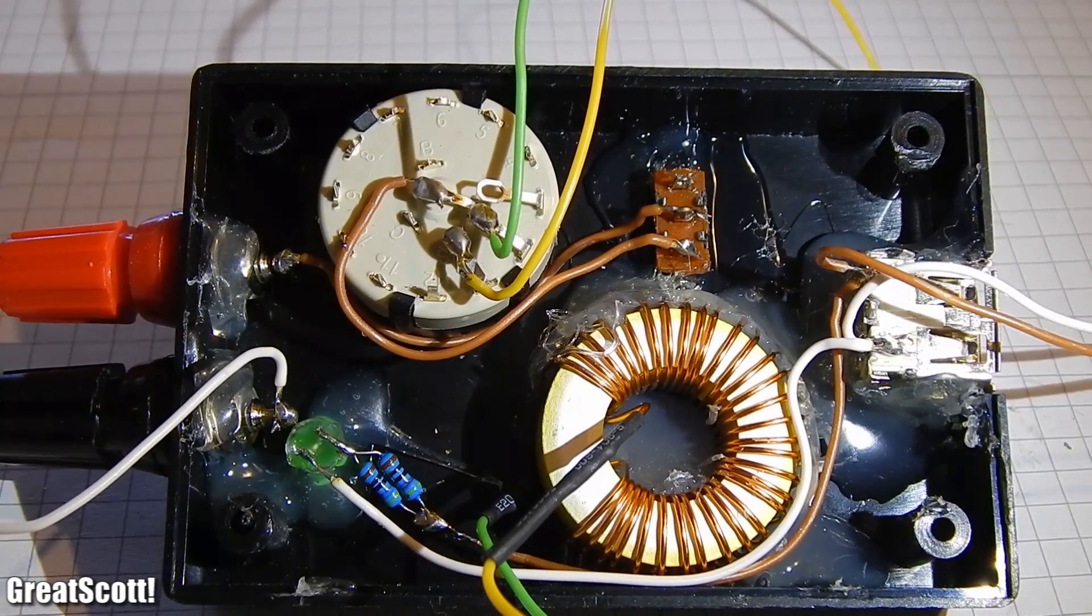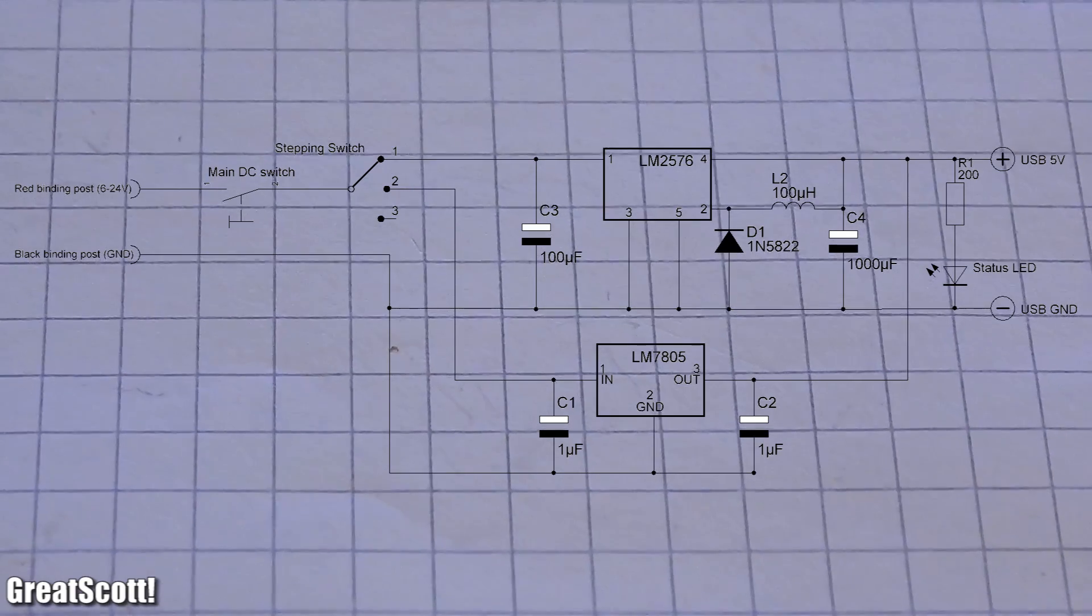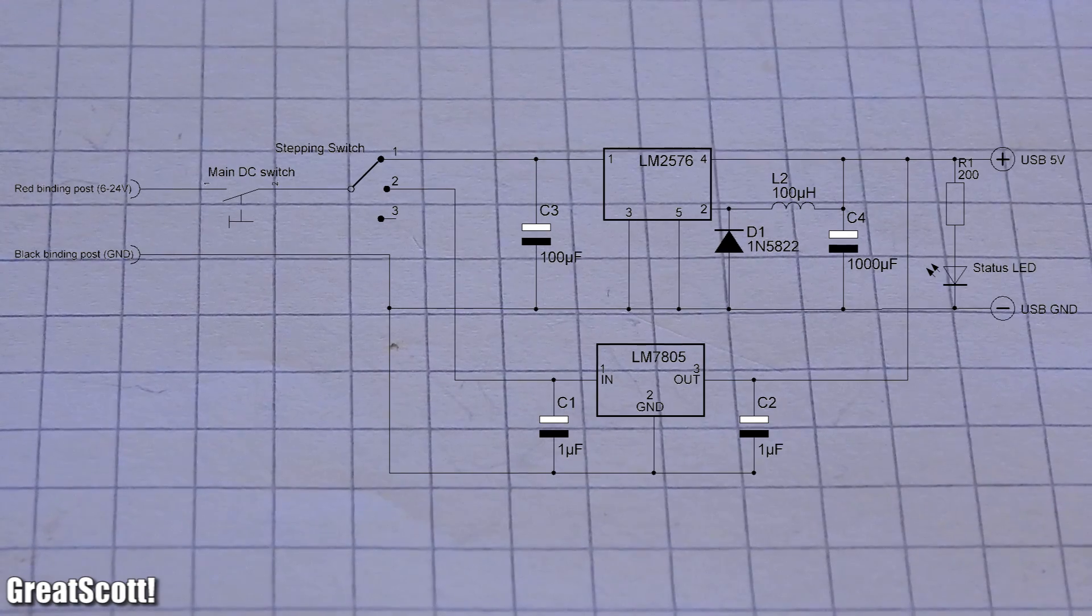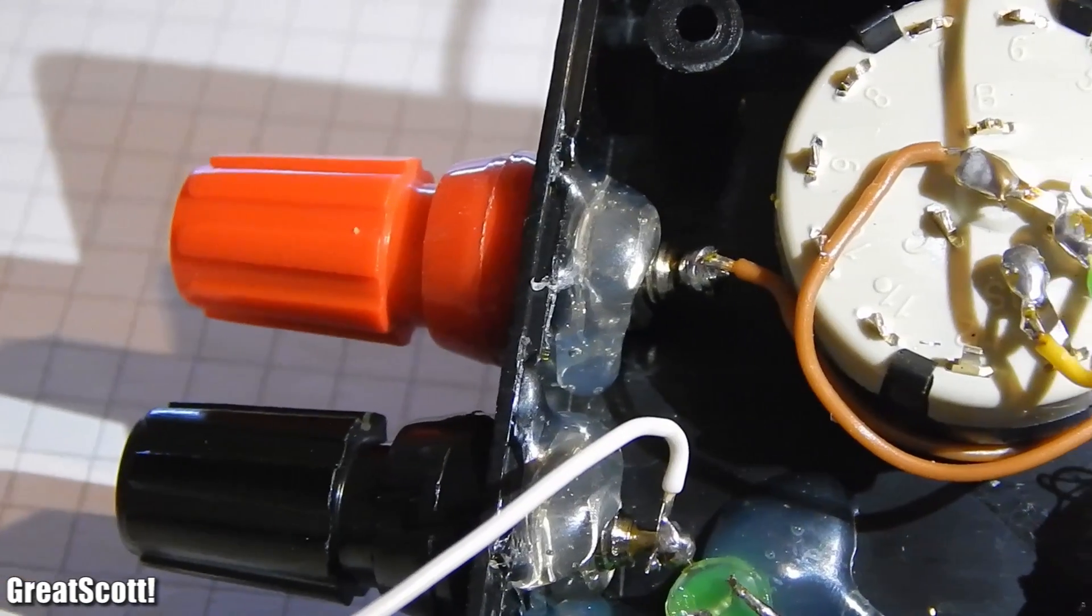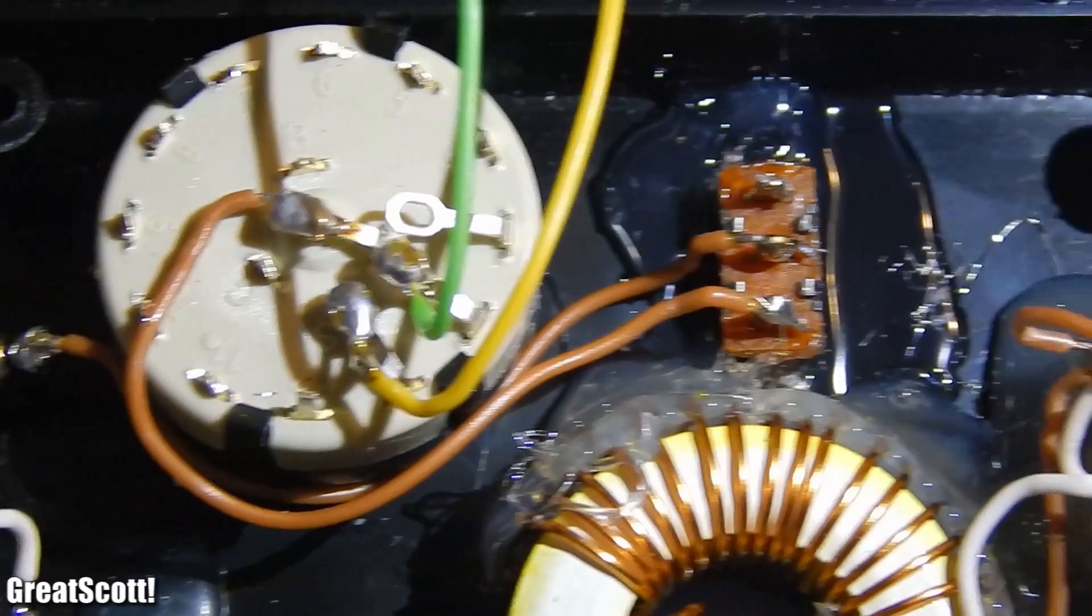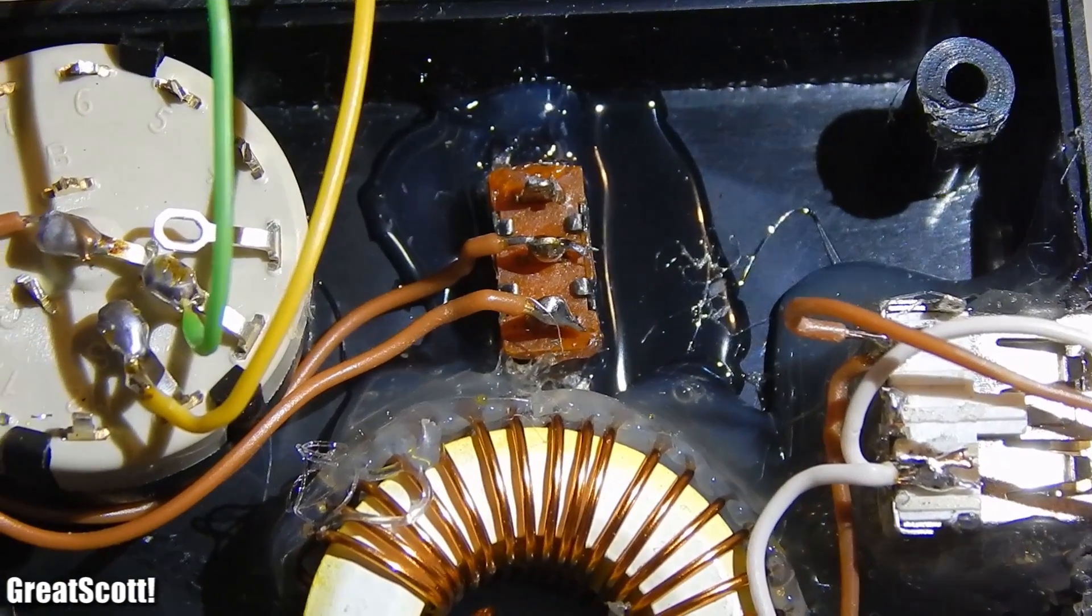Now we have to connect those components with wires. The negative binary pole goes directly to ground on the PCB. The positive binary pole connects to the main DC switch. From there we go to the middle of the stepping switch.